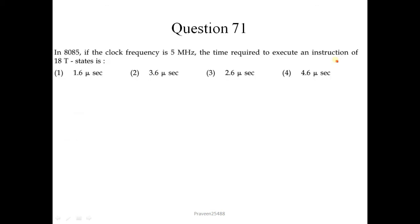Question number 71. In the 8085, if the clock frequency is 5 MHz, the time required to execute an instruction of 18 T-states is: since a single T-state corresponds to one clock pulse, we multiply 18 by 1/5 MHz, which gives 3.6 microseconds. So the correct option is 2.